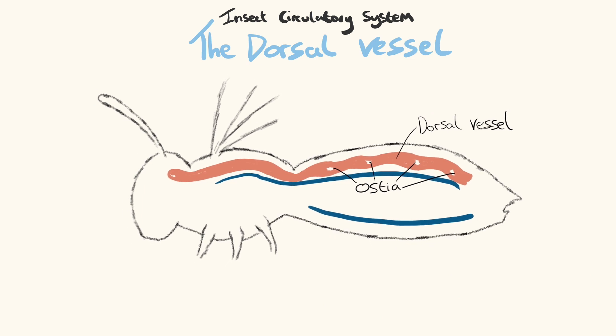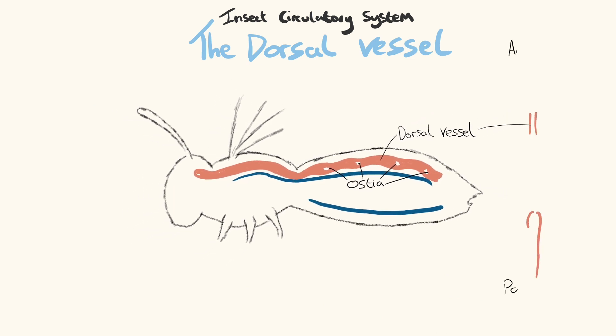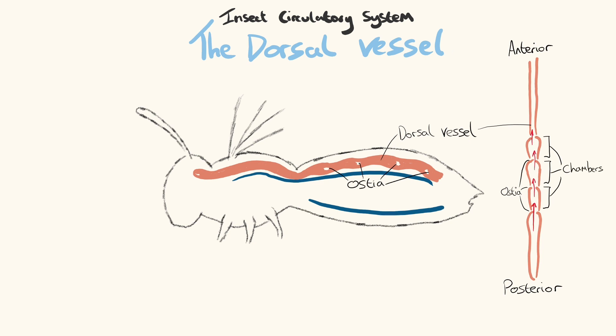In some orders, such as Diptera, the margins of laterally positioned ostea fused to the vessel tissue form valve-like chamber formations which prevent backflow of haemolymph.